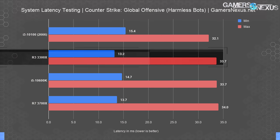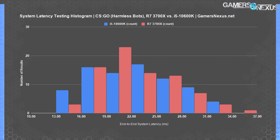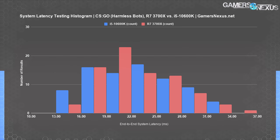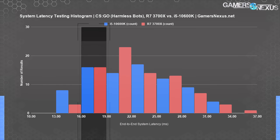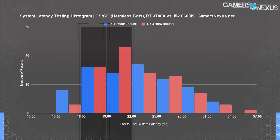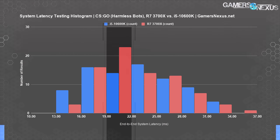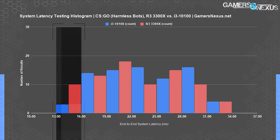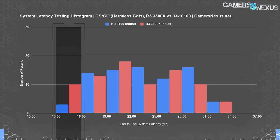Overall, we're really not able to write a big story about any of these numbers. The histograms for the 10600K and 3700X are almost identical in behavior. The bucket size is 3ms — at 13 to 16ms, the 3700X had 3 of 80 entries against the 10600K's 8. At 16 to 19ms they were tied. At 19 to 22ms, the 3700X had 23 entries to the 10600K's 14. There were no major deviations between the buckets. For the 3300X and 10100, it's similar — the 3300X had more entries in the 13 to 16 range, but after that they mostly leveled out.